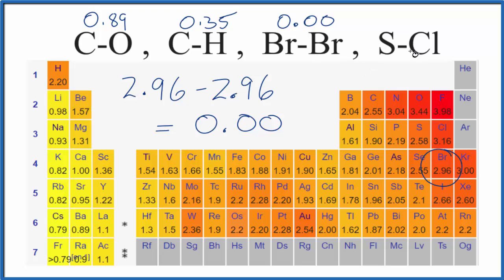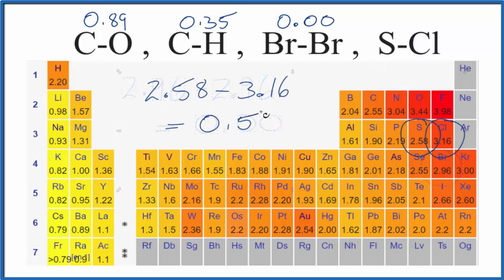Let's look at sulfur and chlorine. Here we're at 0.58, so this would be a polar bond. We'd consider this to be a polar bond.